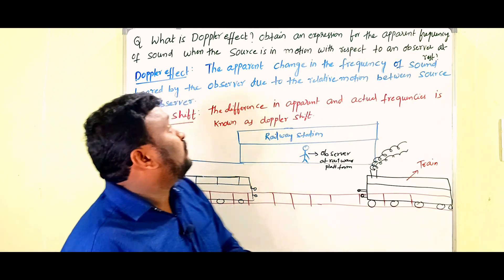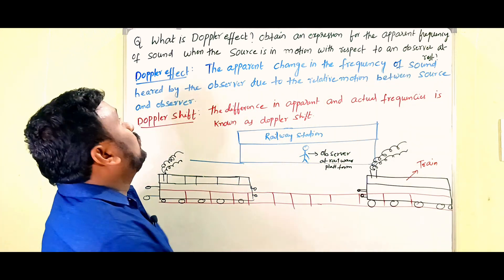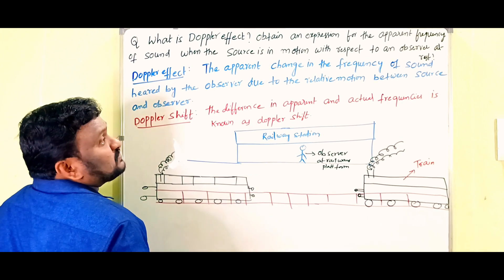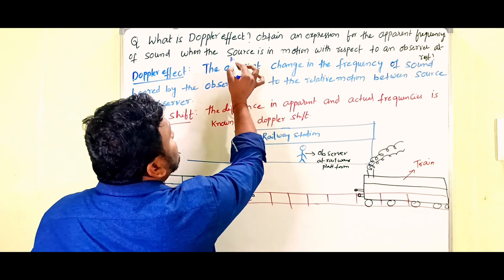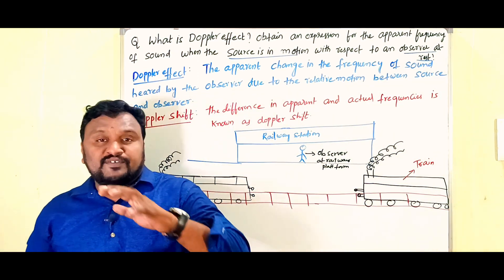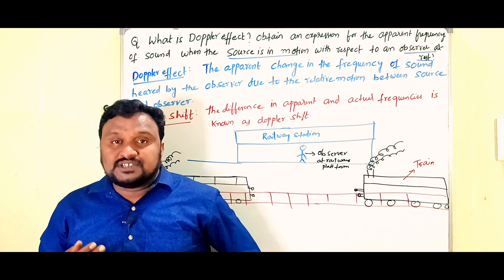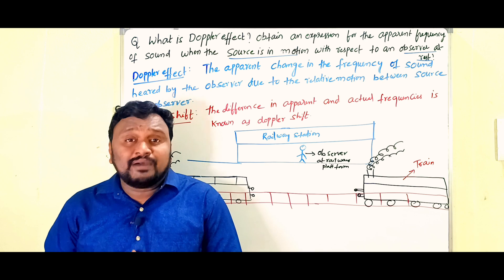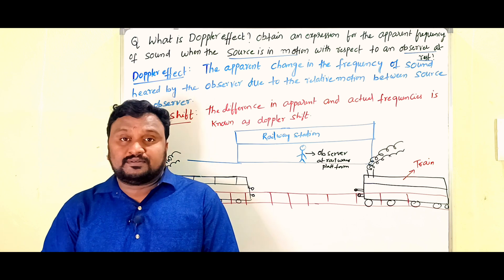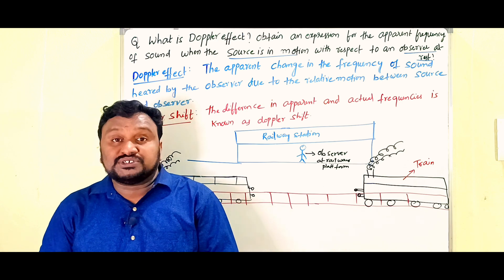The question is: What is Doppler effect? Obtain an expression for the apparent frequency of sound when the source is in motion with respect to an observer at rest. Here the condition is: source is in motion and observer is at rest. So we need to define Doppler effect and also derive the apparent frequency equation. The apparent change in frequency heard by the observer when the source and observer both are in relative motion — that is what we call the Doppler effect.